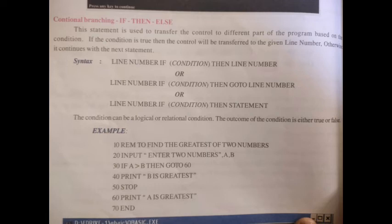Now come to the program. In line number 30: if A is greater than B, then go to line 60. Print B is greatest, stop. Or else, print A is greatest, end. When you see the output you can understand more. If the condition is true, then part will be executed. If it is false, the remaining part will be executed.